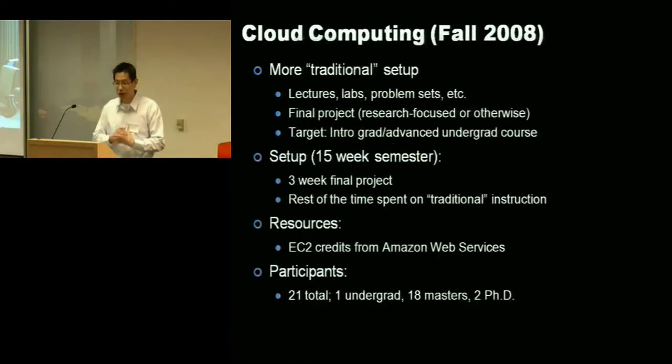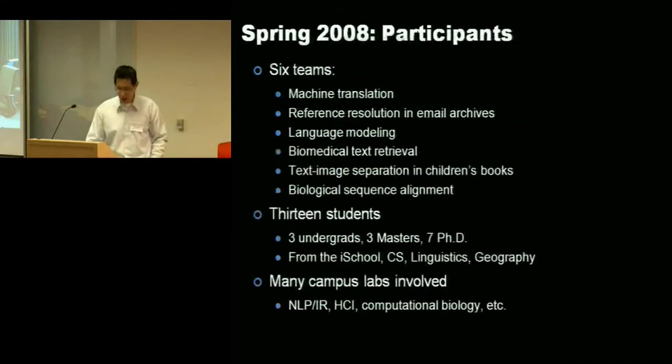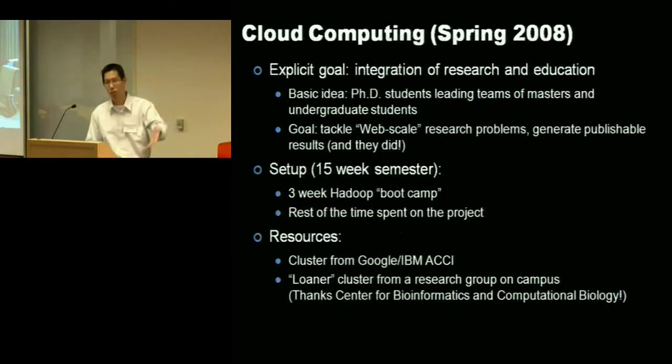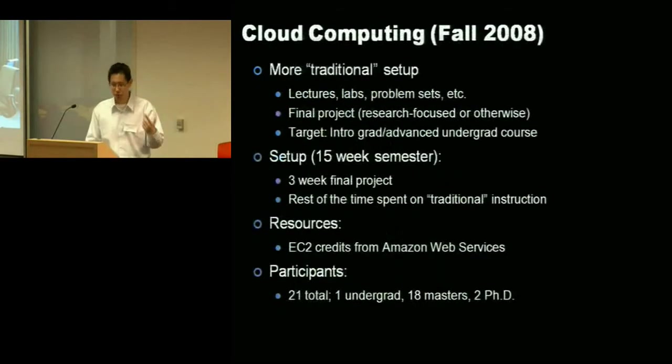The second iteration, which happened in fall 2008, had a more traditional setup. So whereas before, I had a three week boot camp and spent the rest of the semester on the projects, I had a more traditional setup with lectures, labs, problem sets, et cetera. So I essentially flipped the order around. So there was a three week final project and the rest of the time was spent on these lectures and labs and problem sets. The final project in this case could be research focused. I did encourage them to take that route, but I was okay with it if they wanted to play with other things. And the resource I used this was Amazon Web Services. So through a grant from AWS, they provided each one of the students with some free EC2 credits and they used it for their courses and that actually worked out beautifully.